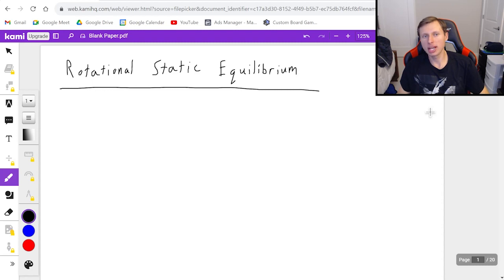In today's video we're going to be looking at a rotational static equilibrium problem. Rotational static equilibrium just means things are balanced. Nothing's moving, nothing's slipping, nothing's rotating. Everything is balanced.